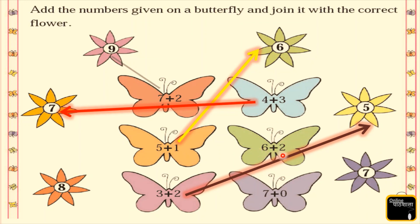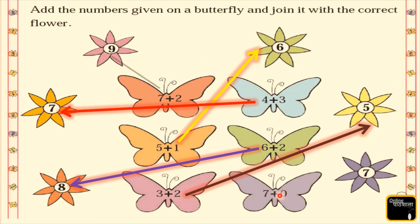Next, 6 plus 2 — what is 6 plus 2? Yes, 6 plus 2 is 8. Where is number 8? Here it is. And the last one: 7 plus 0 — yes, 7 plus 0 is also 7. When we add 0 to any number, the answer will be the same number. So 7 plus 0 is 7 — we match them together.